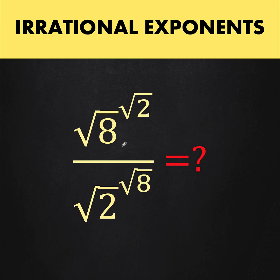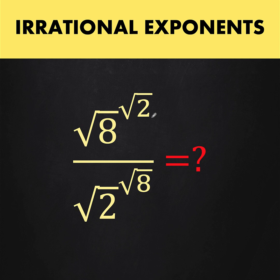Let's talk about irrational exponents. We are asked to find the quotient of the square root of 8 raised to the square root of 2, over the square root of 2 raised to the square root of 8. Notice that our exponents — square root of 2 and square root of 8 — are both irrational numbers. Since exponents are defined for all real numbers, raising to an irrational exponent is a valid mathematical operation. You can pause the video and try to solve this.